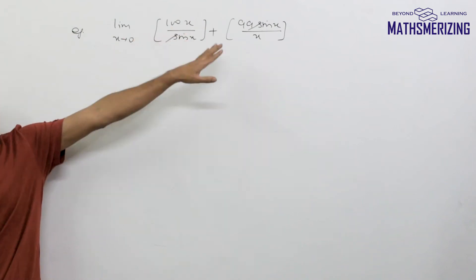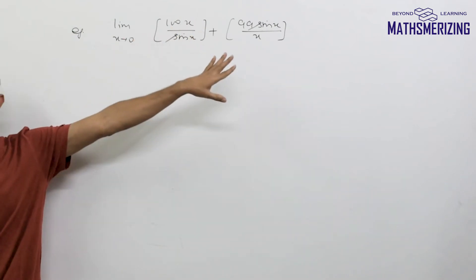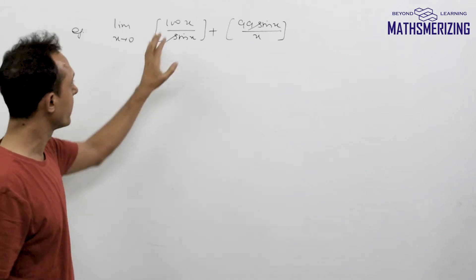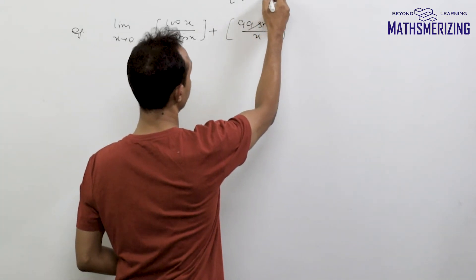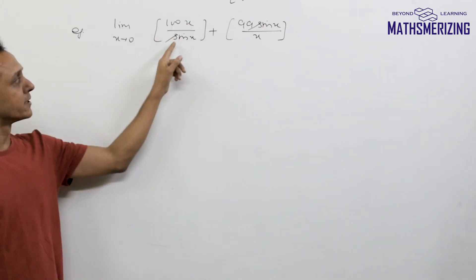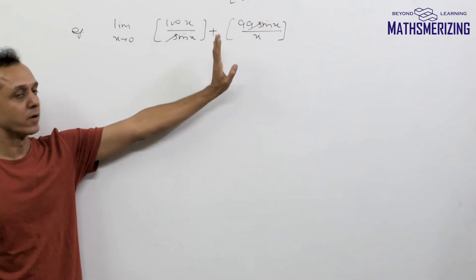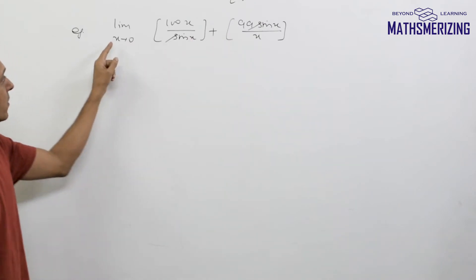While we are discussing limits and greatest integer function, I'll take up this question: limit as x tends to 0 of the greatest integer function of [100x/sin(x)] + [99sin(x)/x]. I need to find the value of this limit.